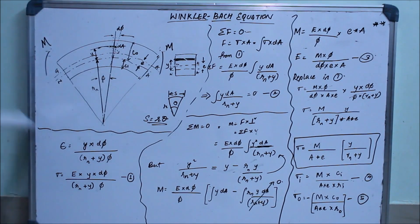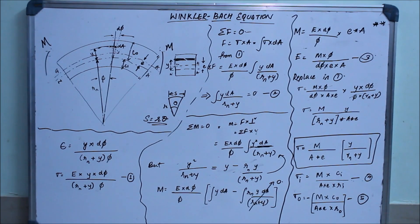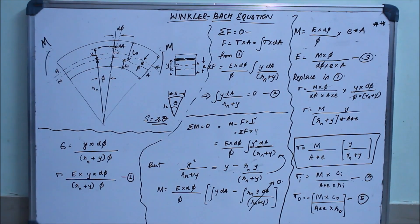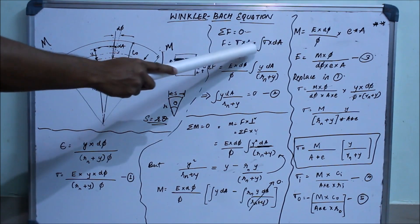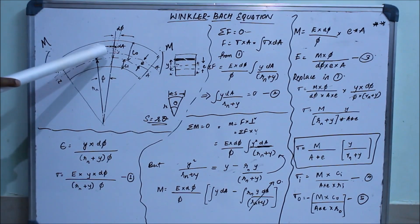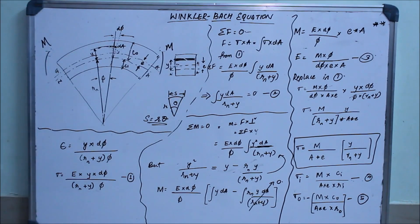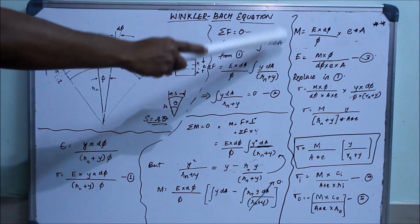For this beam to be in equilibrium, it has to satisfy two conditions: the sum of all forces must equal zero, and the sum of all moments must equal zero. Considering the first condition — sum of all forces equals zero — force equals bending stress times area. Since we are considering this on a small element, we integrate: integral of sigma·dA.